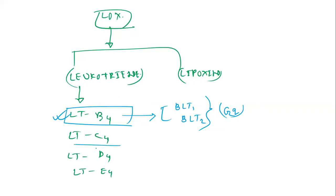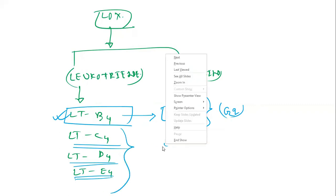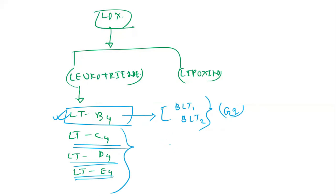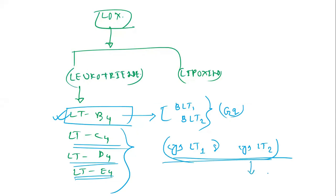For leukotriene C4, D4, and E4, there are CysLT1 and CysLT2 receptors. Both receptors are Gq coupled, so if leukotriene binds with these receptors they will also show excitatory effects or smooth muscle contraction, because these receptors increase intracellular calcium level. We can determine the nature of the effect by knowing what type of G protein the receptor is coupled to.